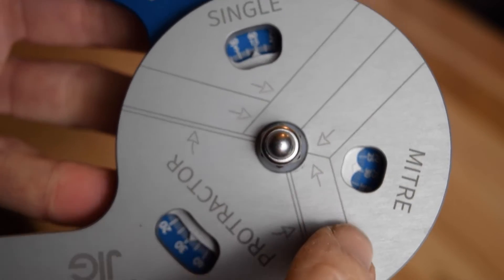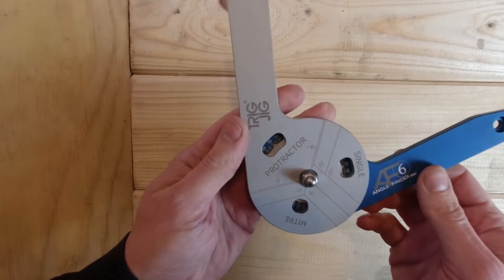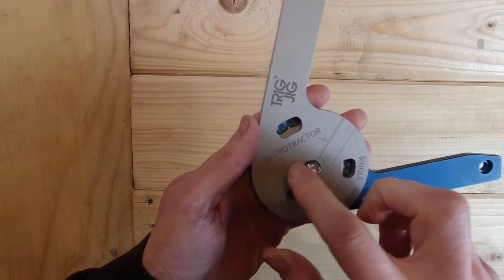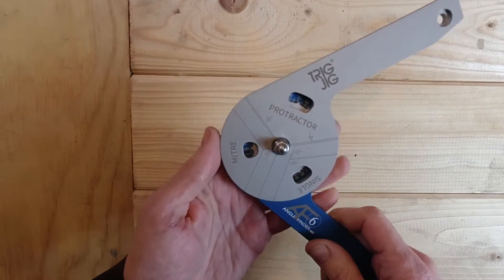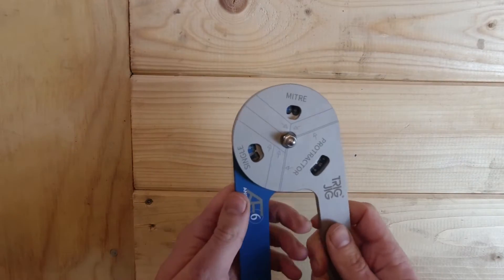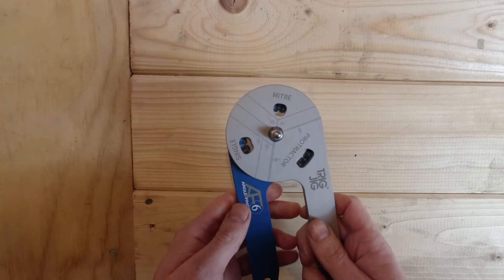Note that the readings are all specific to mitre saws. This is because the way mitre saws are laid out is different to how you would ordinarily think. What we would think as a 90 degree cut, the mitre saw shows as zero.